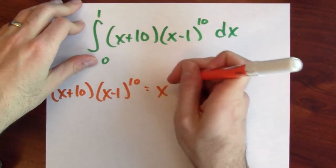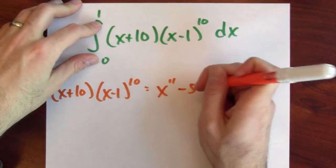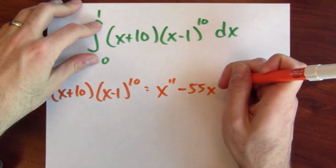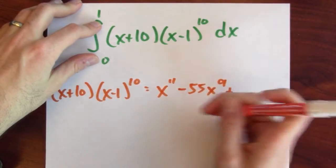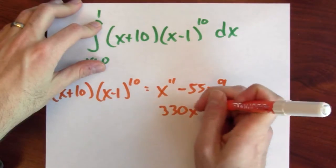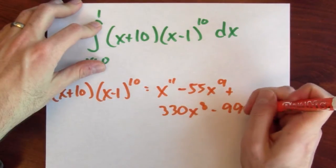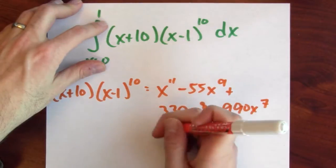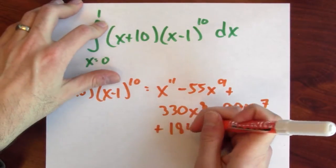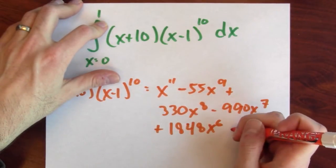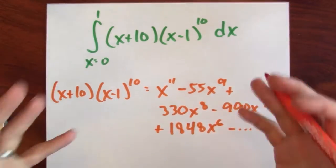We're going to get x to the 11th minus 55 x to the 9th plus 330 x to the 8th minus 990 x to the 7th plus 1,848 times x to the 6th minus, I mean, this is ridiculous.